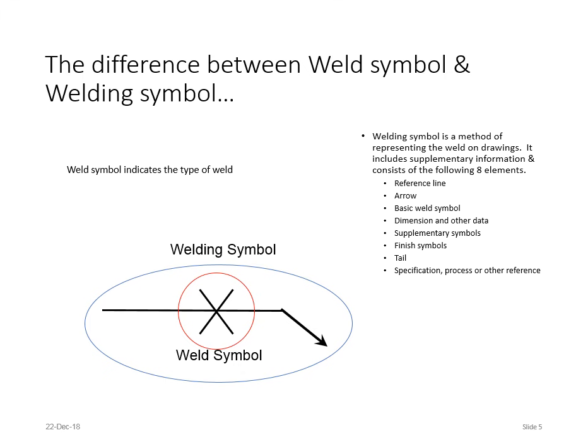There is a difference between a weld symbol and a welding symbol. A weld symbol indicates the type of weld — for example, a V groove, double V groove, or double-sided weld, as shown circled here. The welding symbol, shown in blue, is the whole thing. The weld symbol just tells you what kind of weld you're going to do, giving you the weld type. But a welding symbol gives you the whole deal — it could include finishing, grinding, which procedure to use, and more.